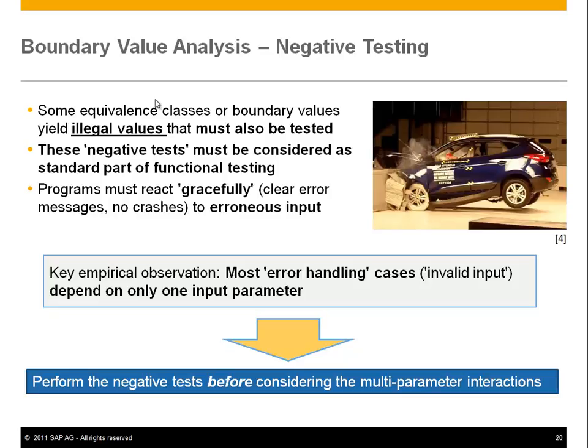One important empirical observation is that most error handling depends on only one input parameter. If you think about what can go wrong when entering data, it's typically things like entering text when an integer is expected, or in the age example, trying to enter a negative age — things like that.